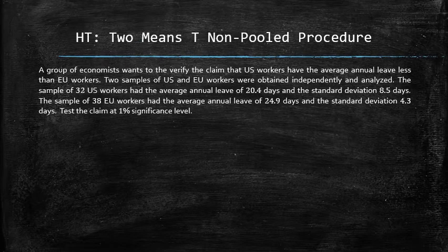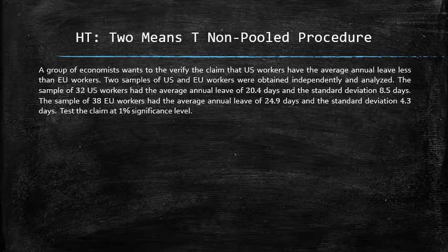A group of economists wants to verify the claim that United States workers have average annual leave less than European Union workers. Two samples of United States and European Union workers were obtained independently and analyzed. The sample of 32 United States workers had an average annual leave of 20.4 days and standard deviation 8.5 days. The sample of 38 European Union workers had an average annual leave of 24.9 days and standard deviation 4.3 days. Test the claim at 1% significance level.